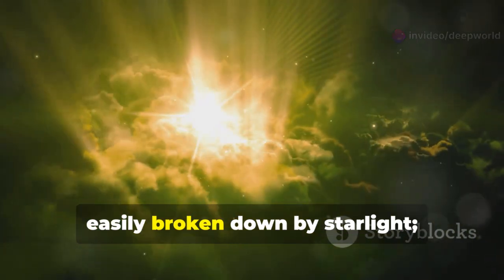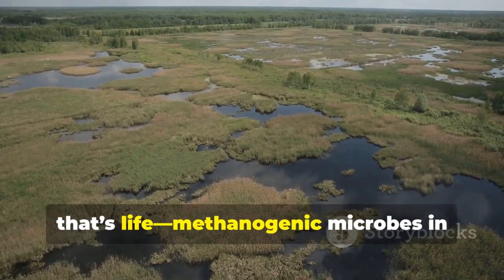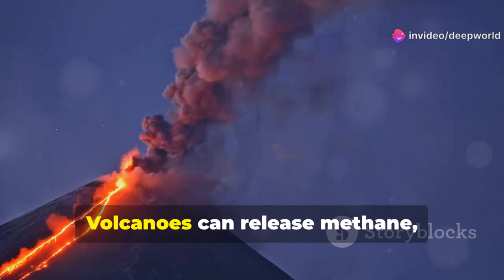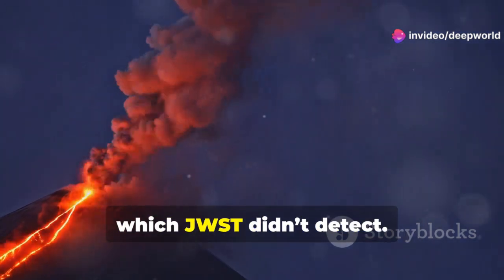Methane is fragile, easily broken down by starlight—something must be replenishing it. On Earth, that's life: methanogenic microbes in wetlands and animal guts. Volcanoes can release methane but usually with sulfur dioxide, which JWST didn't detect.